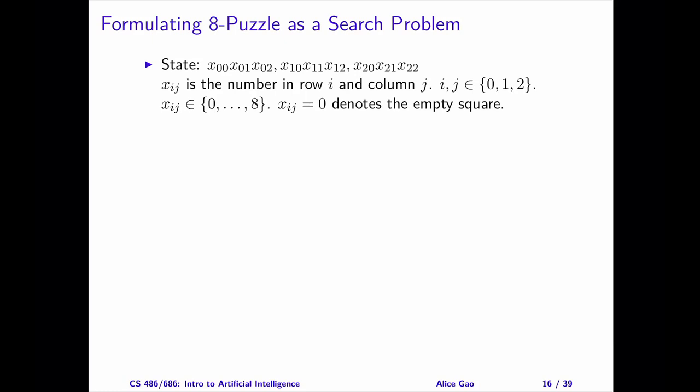For the 8-puzzle, it's critical to remember the order of the numbers. Let's use 0 to denote the empty square. Each state contains 9 numbers. We will write down the numbers line by line from top to bottom. For each line, we'll write down the 3 numbers from left to right.